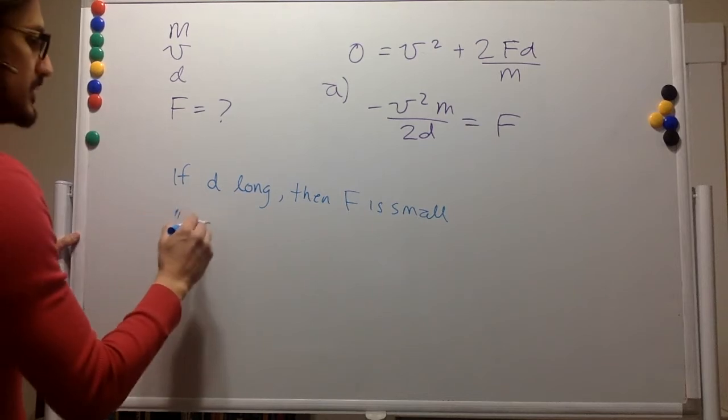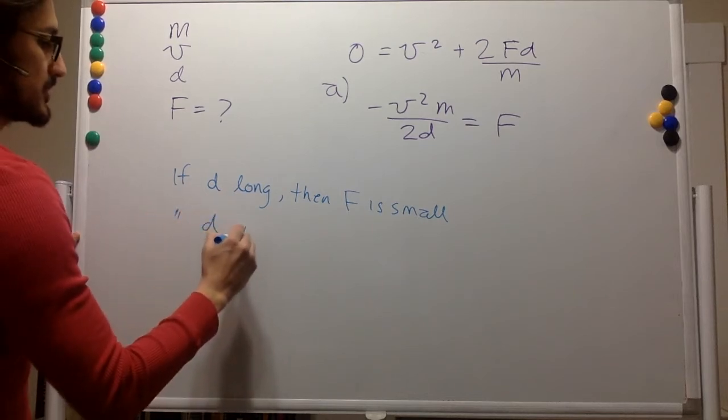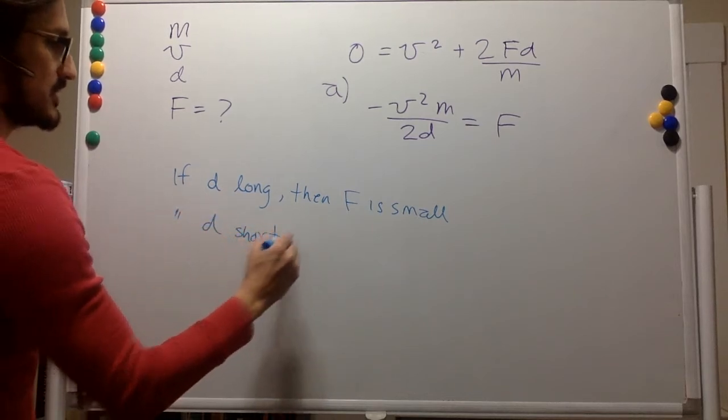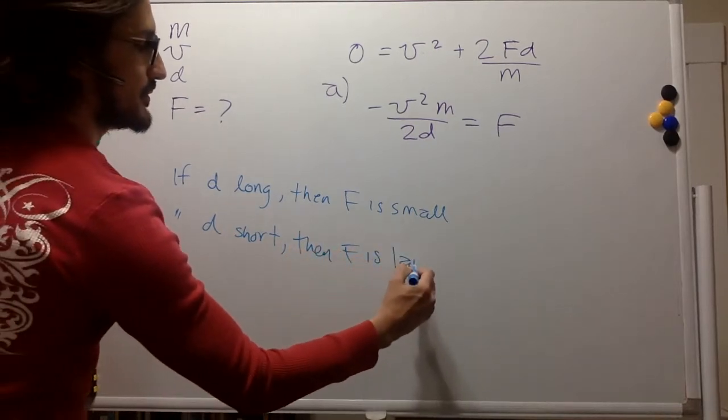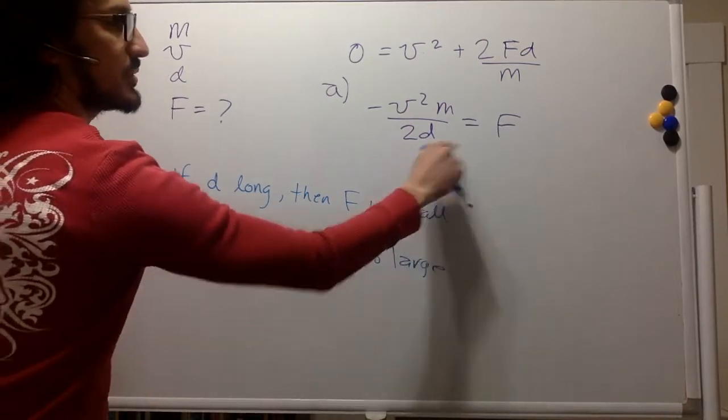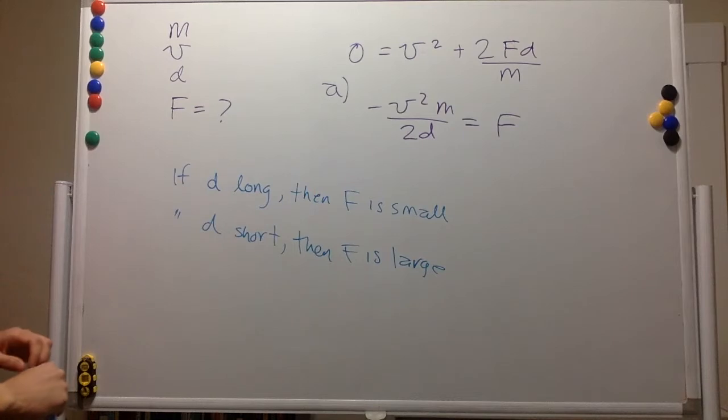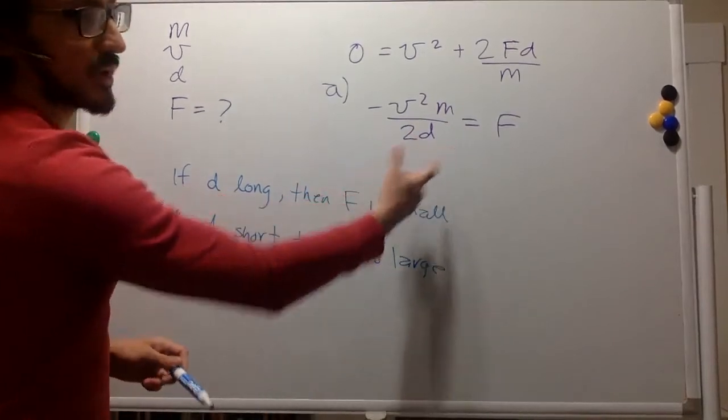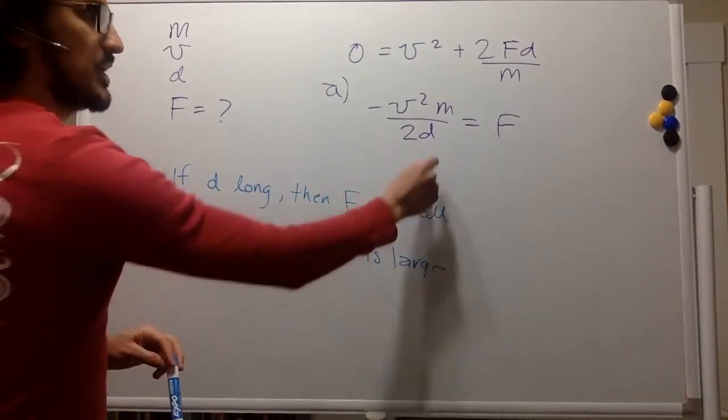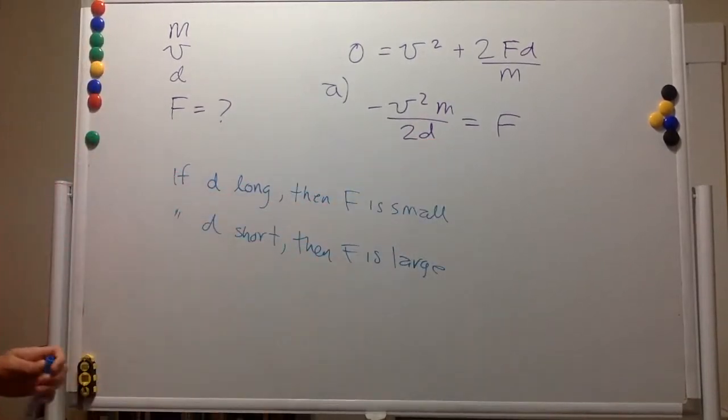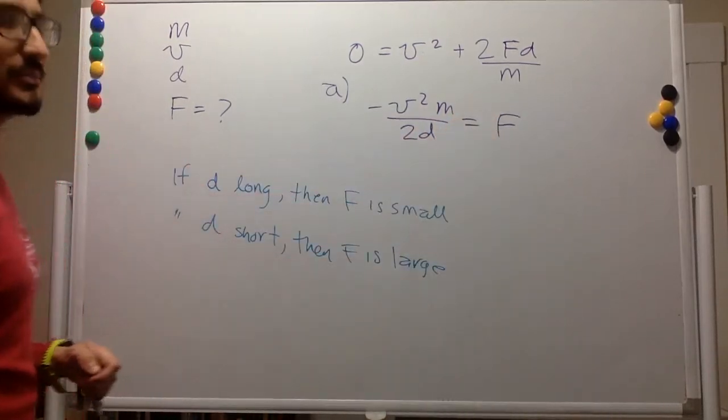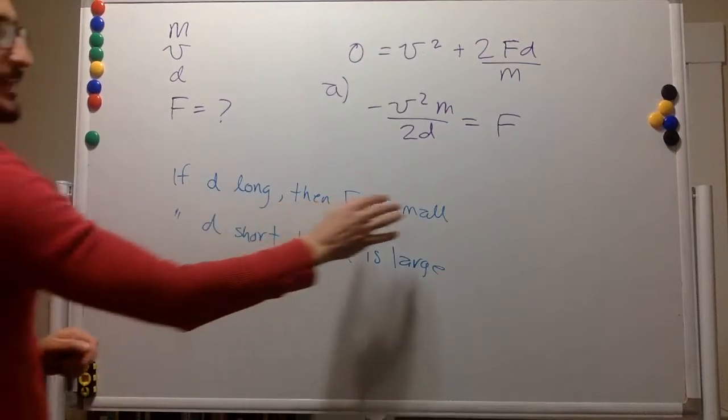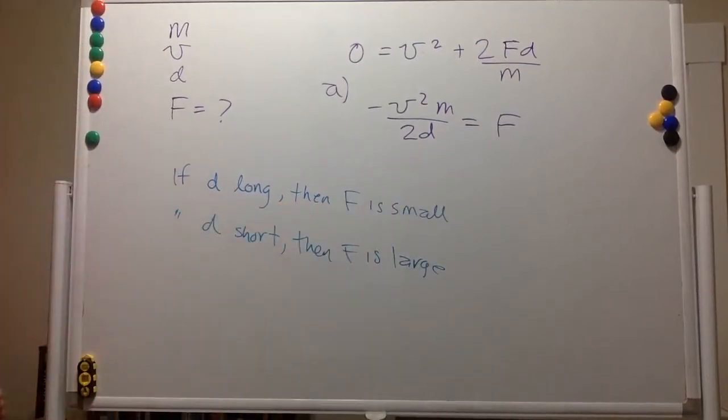If the distance is short, then F is large. And this makes sense. For example, when you crash against the wall, this distance is very tiny. And so the force is pretty humongous. So humongous that it might hurt you. So it makes sense. That would be the distance.